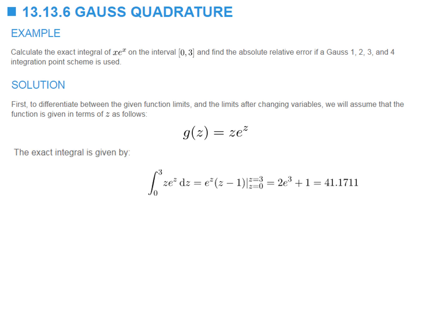Let's find the exact integral. We can do this because we have the closed-form solution for this integration. You can do this using Mathematica or by hand. The exact integral from zero to three of z multiplied by e to the power z is equal to 41.1711.